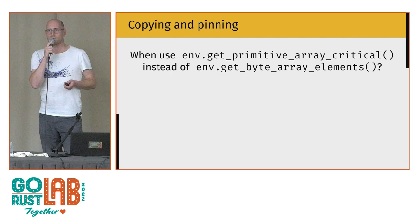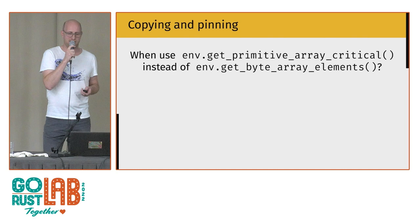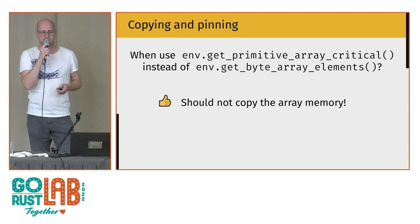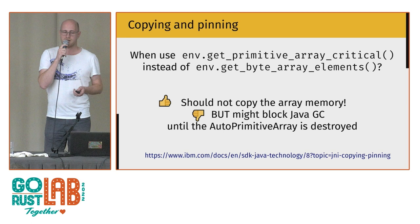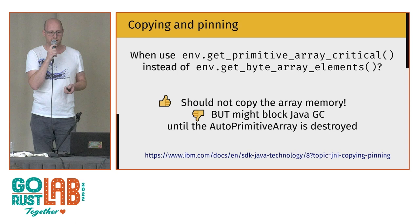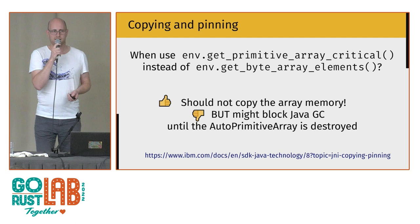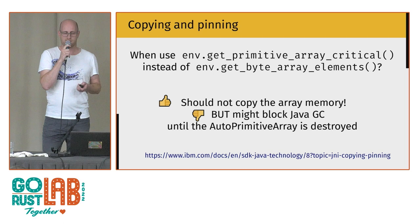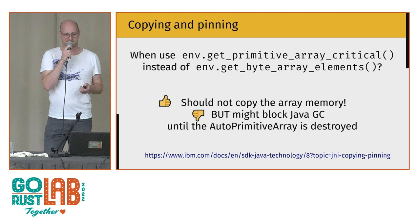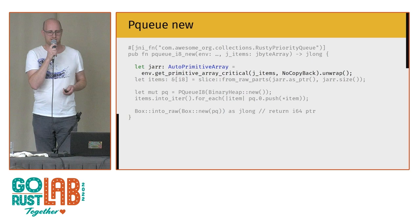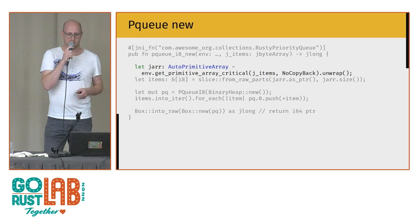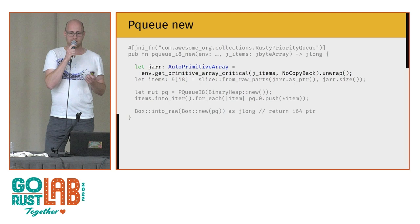There are two approaches to fetching an array from the Java side. Instead of `get_byte_array_elements`, there is also `get_primitive_array_critical`. The difference is it should not copy the array, but it might block garbage collection on the Java side until the returned `AutoPrimitiveArray` is destroyed. I said 'should' and 'might' because it actually depends on the JVM you're using — you need to check if it's actually a copy or not. It might improve performance with some disadvantages. The nice thing is the function signature is the same, so you can just replace it and get an `AutoPrimitiveArray` instead.